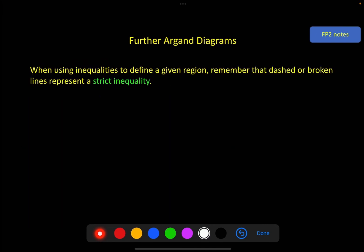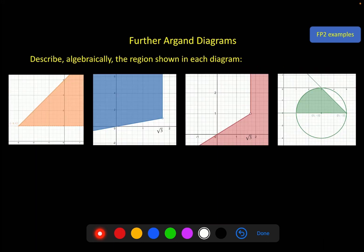One final note is just to emphasize when you're using inequalities, remember that a dashed or broken line represents a strict inequality. It's so very easy to forget this. And I'll finish with a few examples going the other way, where we've been given the diagram, and we have to write out the inequalities. Starting with the orange one,